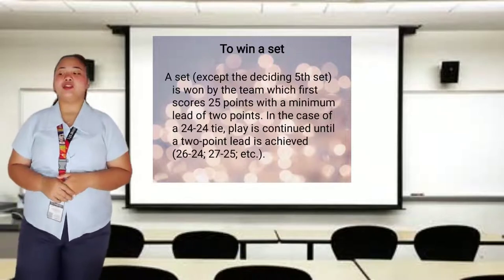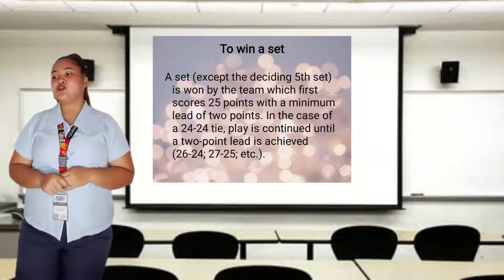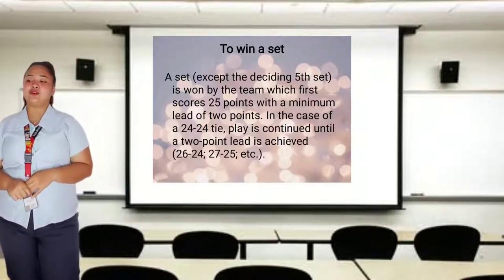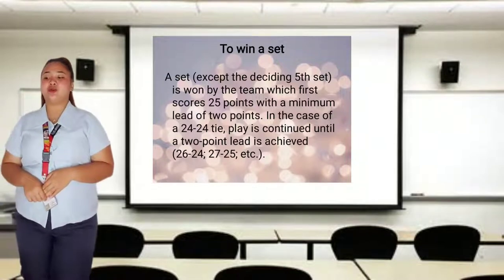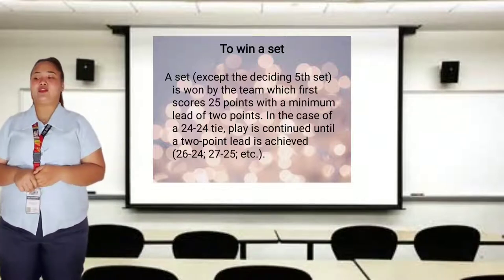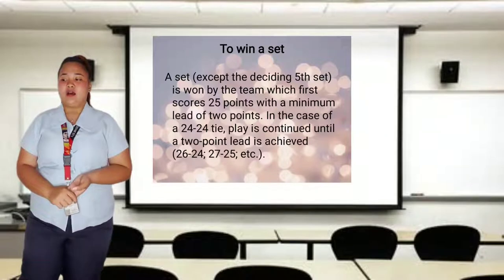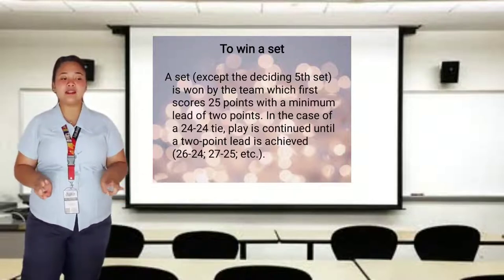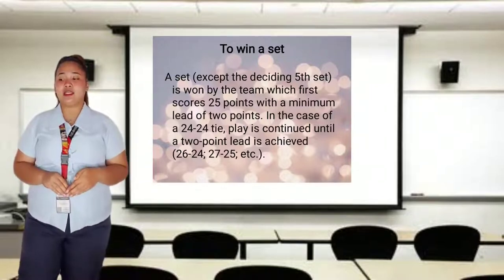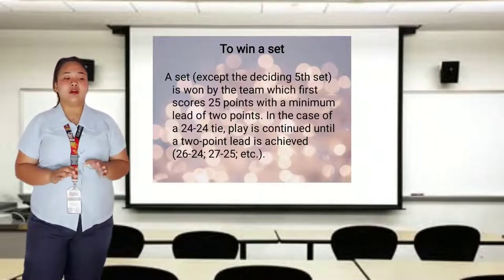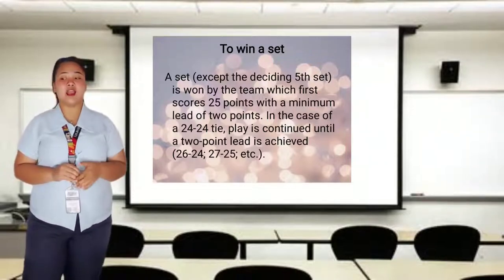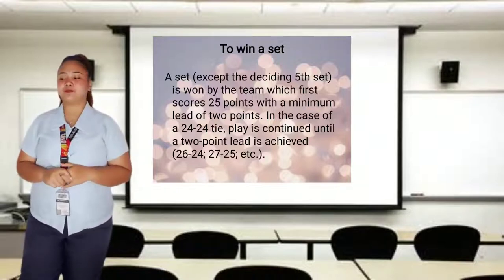Let's proceed to winning a set. A set, except the deciding fifth set, is won by the team which first scores 25 points with a minimum lead of 2 points. In the case of a 24-24 tie, play is continued until a 2-point lead is achieved — 26-24, 27-25, etc. To win a set, the first team to reach 25 points is the winner. If the two teams are tied, play continues until one team achieves a 2-point lead.